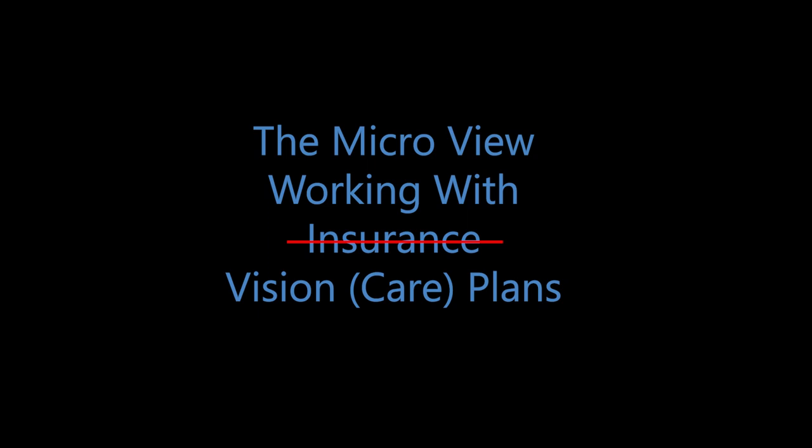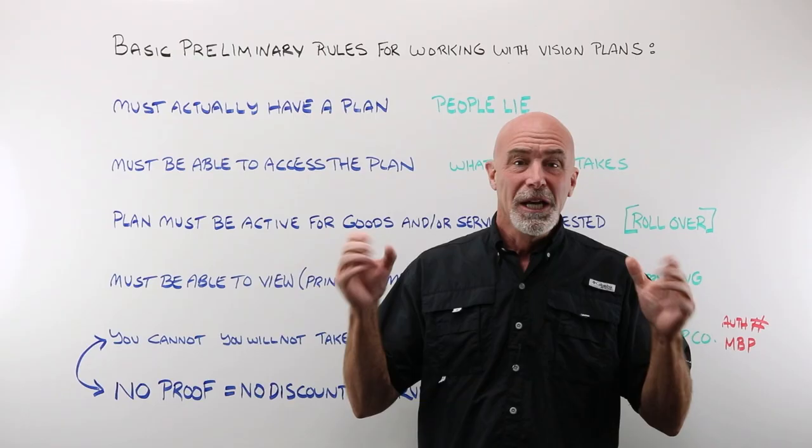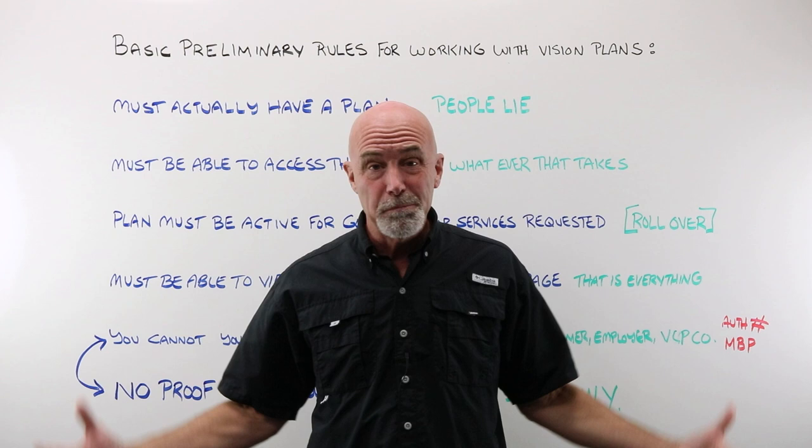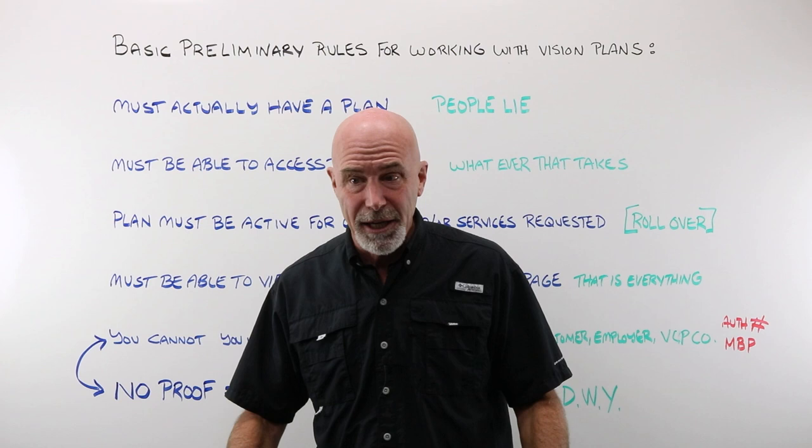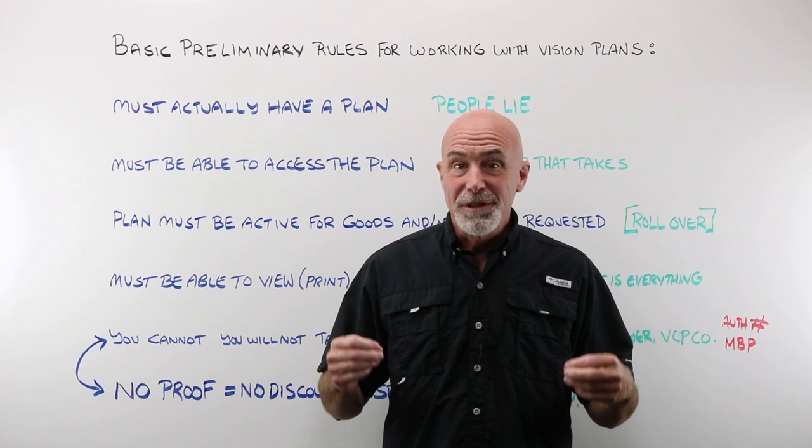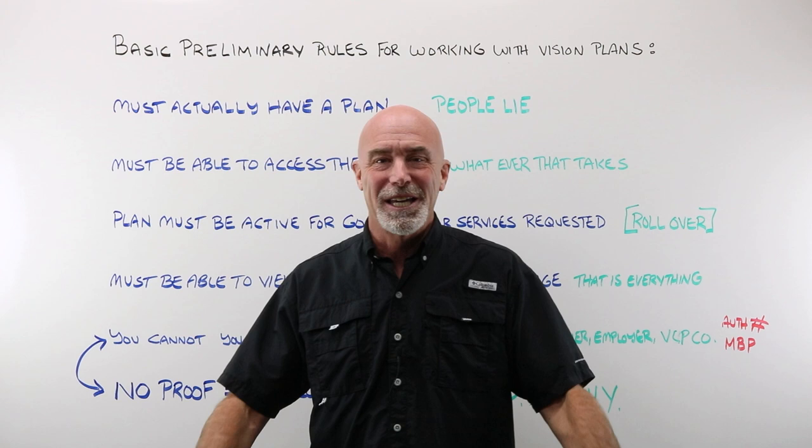Last week we did the big picture overview of working with vision care plans. This week we're looking at the details, the micro, the smaller picture, if you will. A lot of this is not going to make sense. Bear with me for a second. Until you start working with this stuff on a regular basis, it's a little abstract.